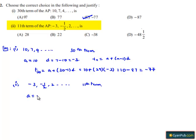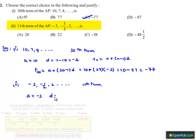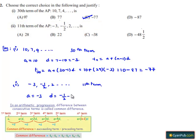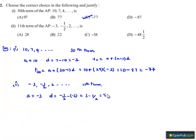Here the first term a is -3, and the common difference d is the second term minus the first term, which is -1/2 minus (-3), which equals 5/2.